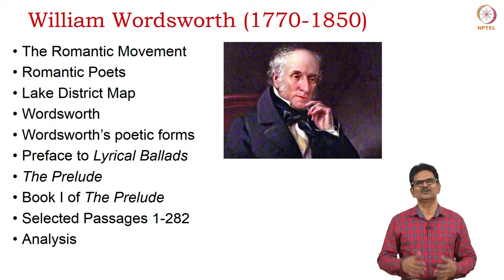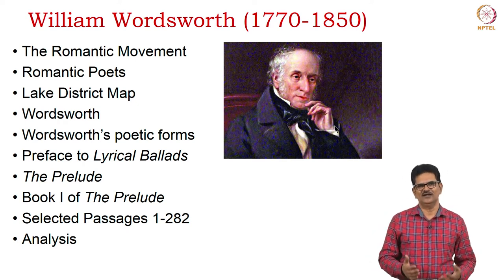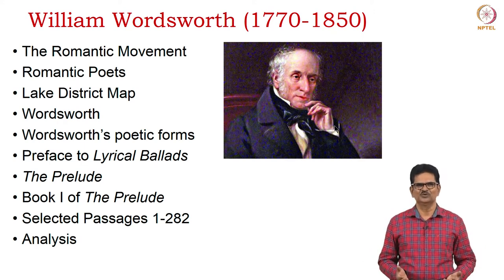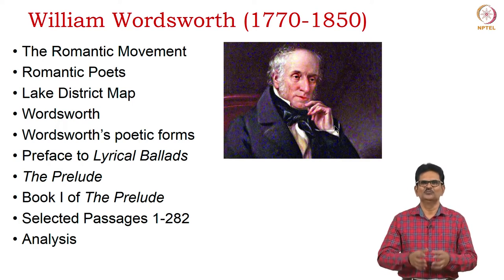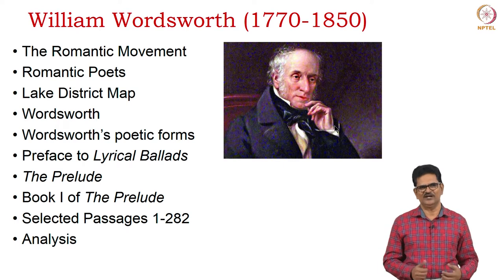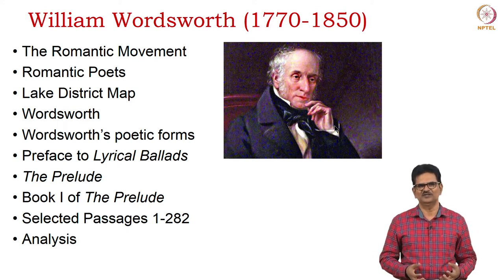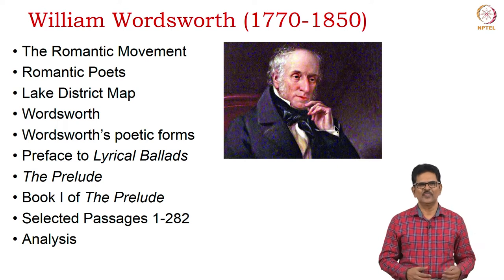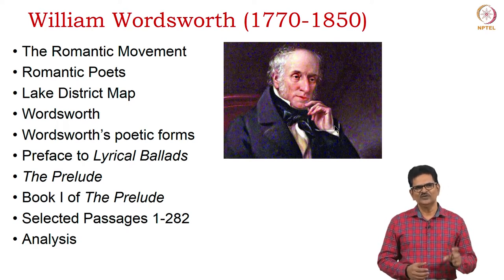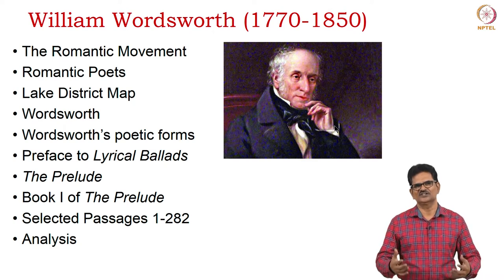Hello! The first poet we look into in the Romantic period is William Wordsworth. He was born in 1770 and died in 1850. It was he and Coleridge who announced the Romantic movement. We will see the Romantic poets together in one slide, then the map of the Lake District, because many of these poets were called Lake District poets or Lake poets. The prominent Lake poet is Wordsworth. We will see some of the poetic forms experimented by Wordsworth, then pay attention to the Preface to Lyrical Ballads and The Prelude, from which we have Book One for our discussion.